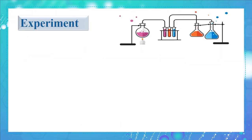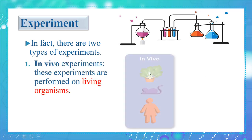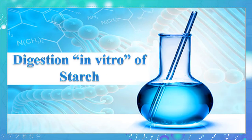In order to verify our hypothesis, we must conduct an experiment. There are two types of experiments: in vivo experiments, which are performed on living organisms, and in vitro experiments, which are conducted in test tubes. In this video, we will study the digestion in vitro of starch.